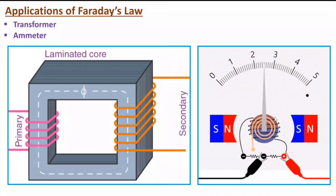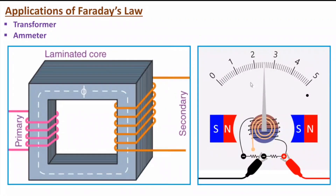The second application is the ammeter. It has magnets generating a magnetic field and a closed loop winding. When current passes through the closed loop, it results in a force on the mechanical structure, causing deflection that indicates the amount of current passing in the loop. Both transformer and ammeter function based on Faraday's Law.